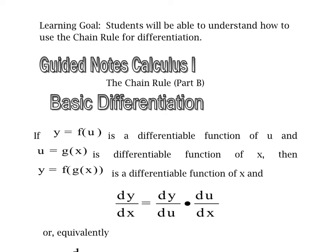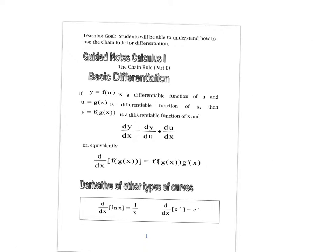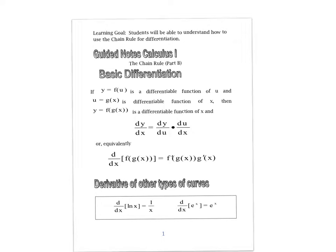All right, chain rule part B. Same thing here. We're still going to use U substitution. I think that's the easiest way to do these. We just got a little bit more involved problems here. Let's go to the next page.